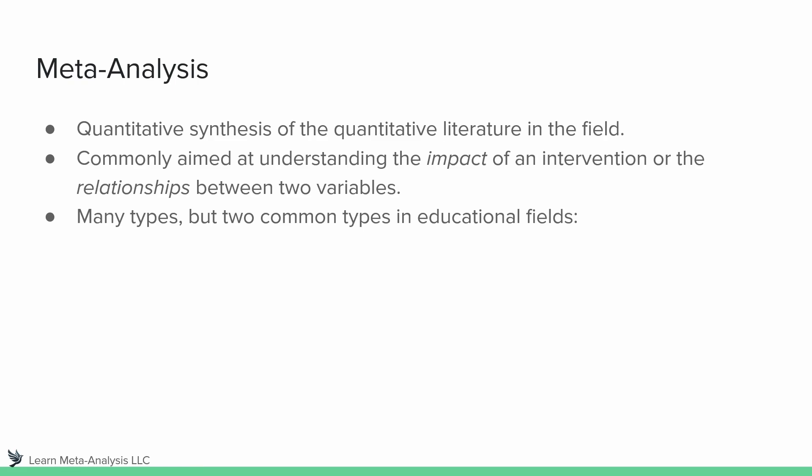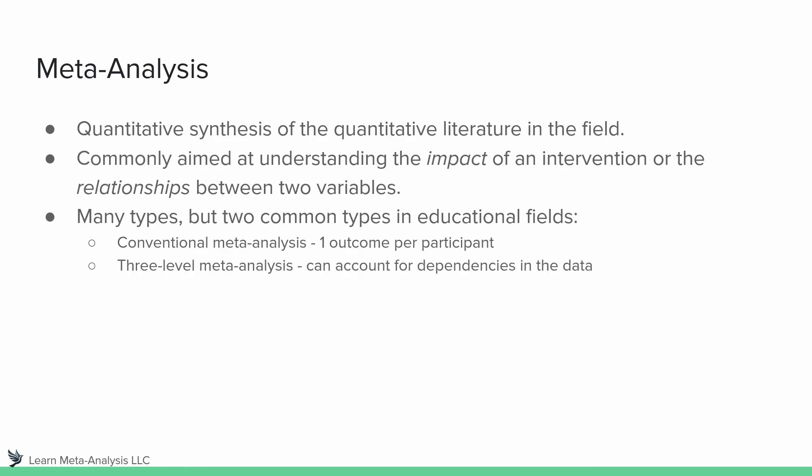There are many different types of meta-analysis — conventional meta-analysis, three-level meta-analysis, structural equation modeling meta-analysis, and various other methods. But we only have two that are really common in education right now. One is conventional meta-analysis, which involves one outcome per participant. We also have three-level meta-analysis, which can actually account for dependencies within the data. We're going to come back to conventional versus three-level in a later video, but I want you to know for now that they exist and they're different.